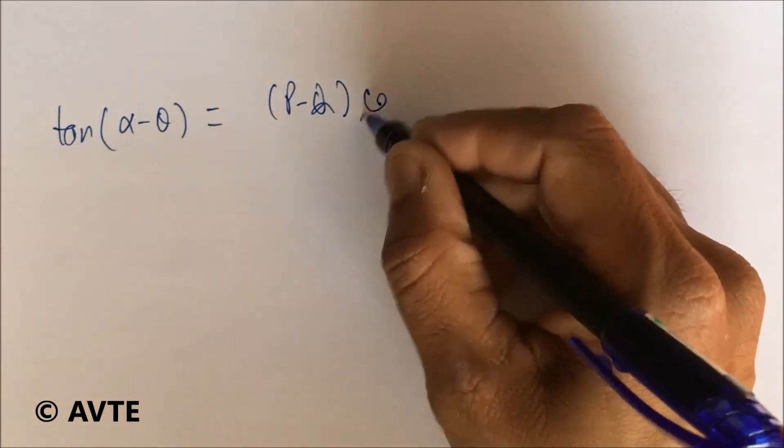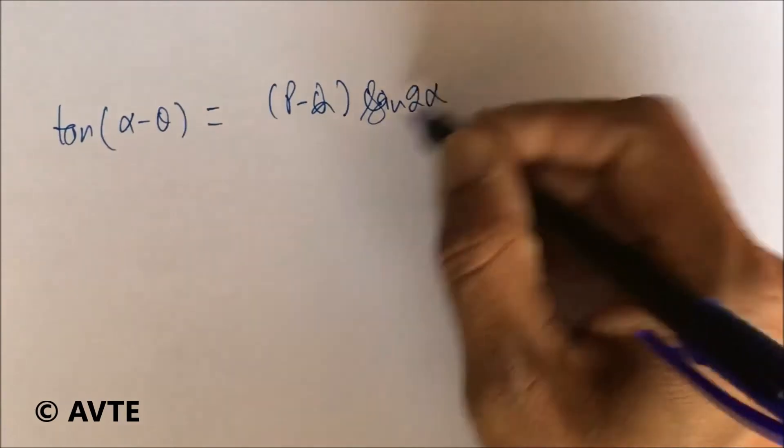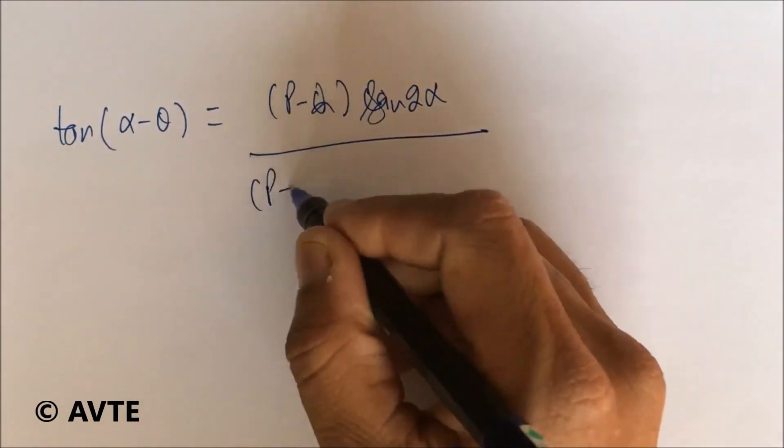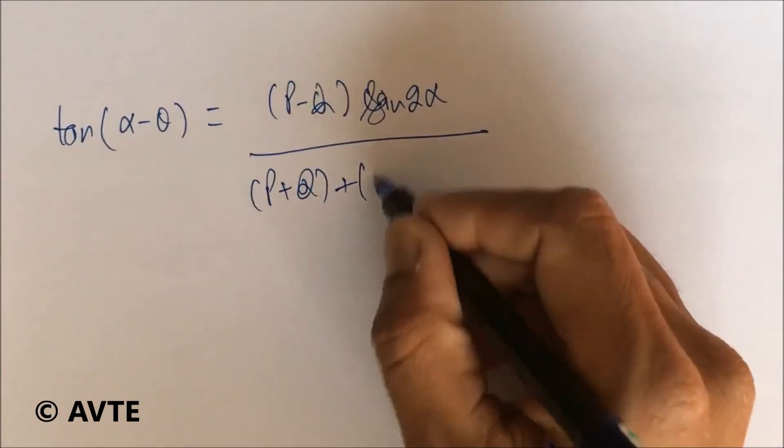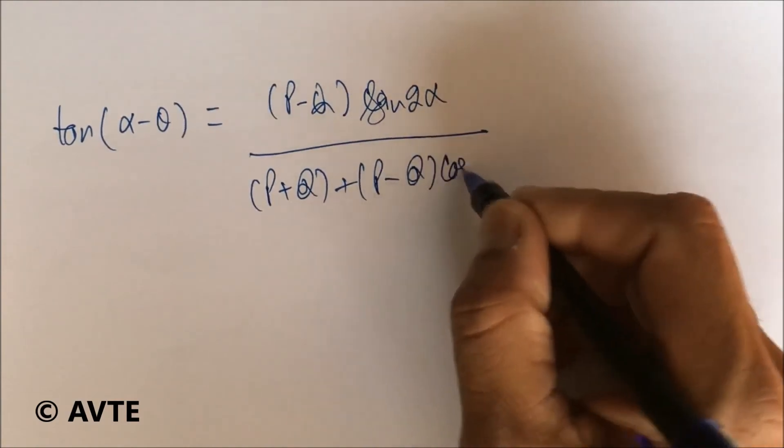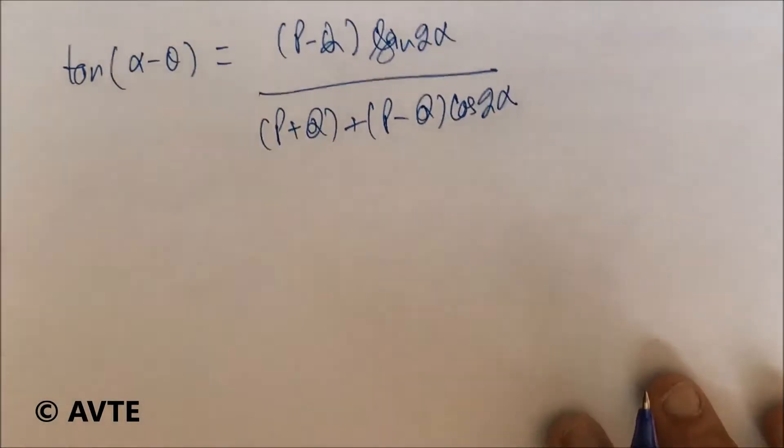α becomes 2α, so it is sin 2α upon... We open tan(A-B).